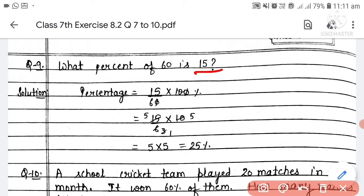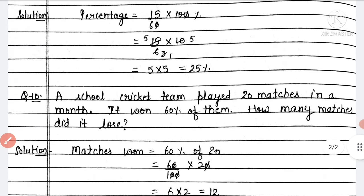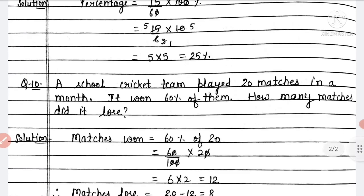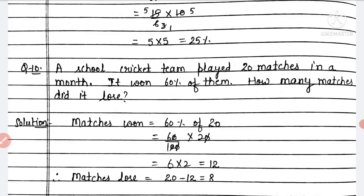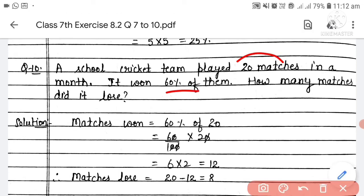Now Question 10: A school cricket team played 20 matches in a month. The cricket team played a total of 20 matches. It won 60 percent of them. How many matches did it lose? The percentage won is given. First, let's find matches won: 60 percent of 20 — dividing by 100, 'of' means multiply, cancelling zeros — 6 multiplied by 2 equals 12. So matches won = 12.